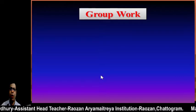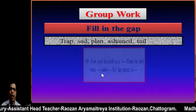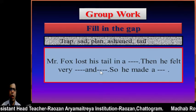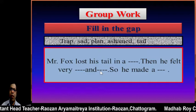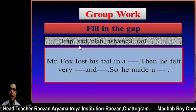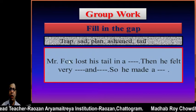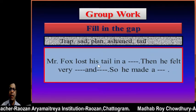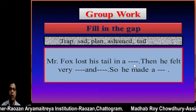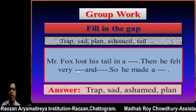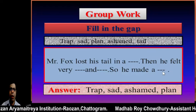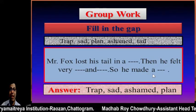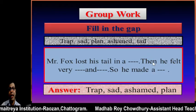Now this is the gap-filling activity. There is no group — you try it yourself at home. Pause the video and try to fill in the gaps. The words given are: trap, sad, ashamed, and plan. For example: Mr. Fox lost his tail in a trap. Then he felt very sad and ashamed. So he made a plan. You need to find where each word fits suitably.